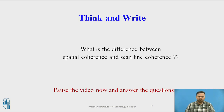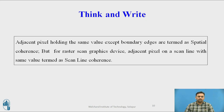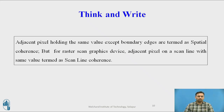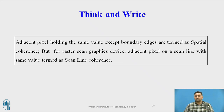What is the difference between spatial coherence and scanline coherence? In spatial coherence, adjacent pixels holding the same value in a particular image — except at boundary edges — may be multiple pixels not belonging to the same row or column, but they are connected and hold the same properties. In scanline coherence, for a raster scan device scanning line by line, adjacent pixels on the same scanline with the same value are referred to as scanline coherence.